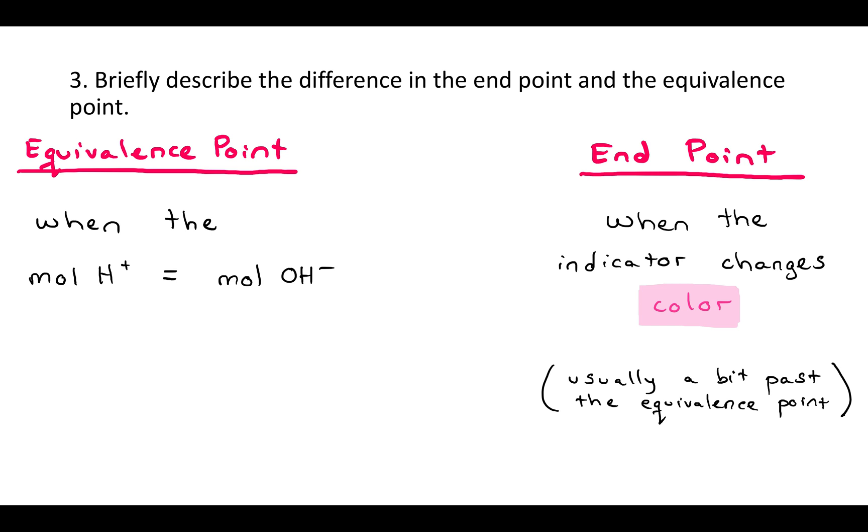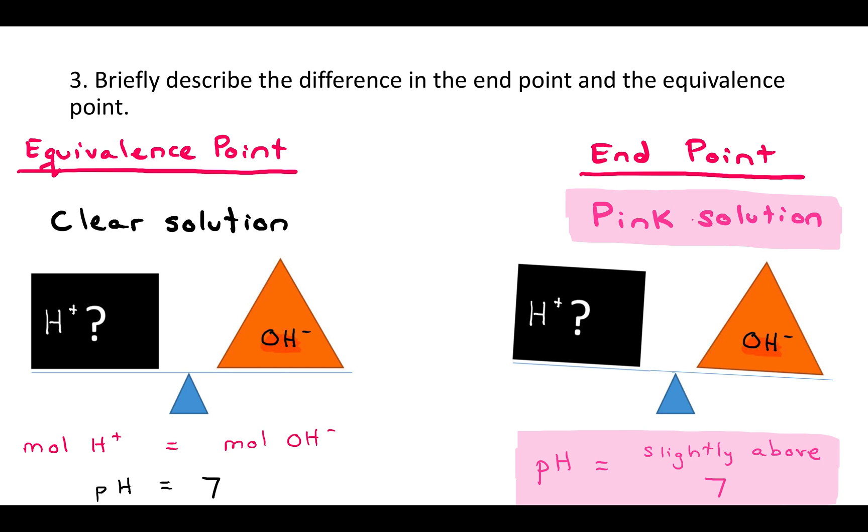Ideally, those two would be as close as possible. Just to visually represent that, the equivalence point would be that clear solution. And then the end point would be slightly pink for phenolphthalein. You just have just a little bit more of that OH minus to make it basic to make the phenolphthalein turn pink, to let you know you'll be able to visually see that you're at the end of the titration.